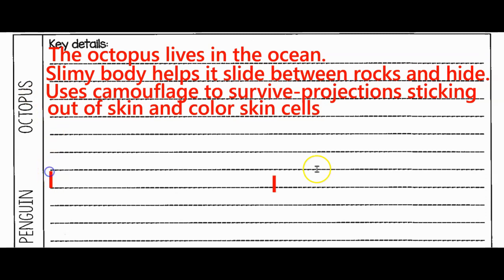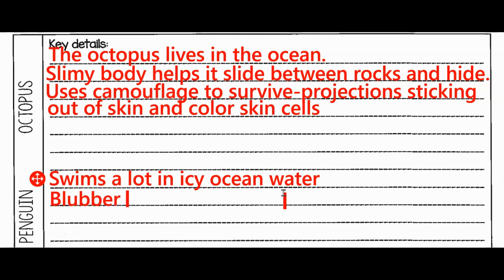And then here's for the penguin. He swims a lot in icy ocean water. What does he use to keep it warm? For a penguin. Yes. A what? Blubber, yes. Blubber and his feathers keep it warm.